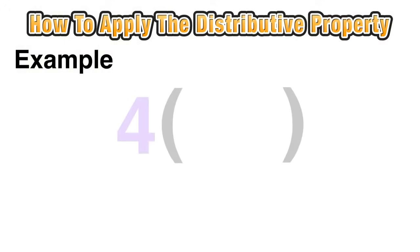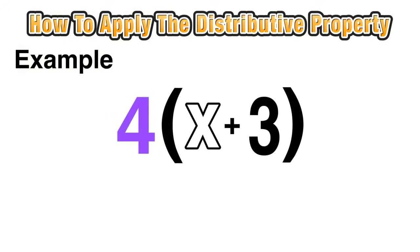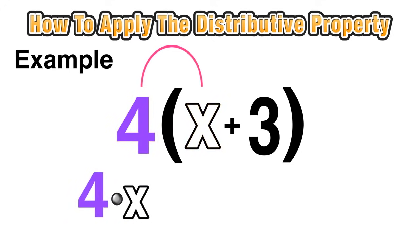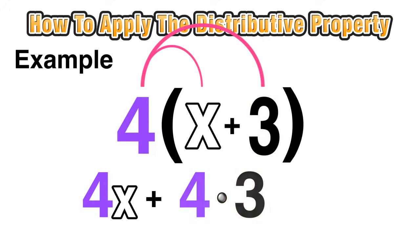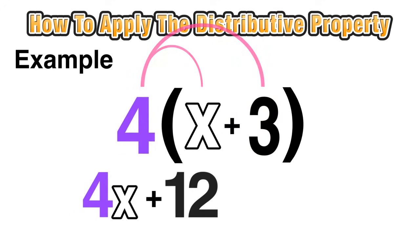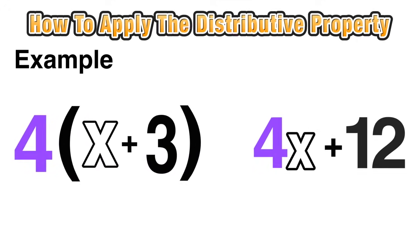Now we're going to extend our thinking to algebra. Our first example is 4 being multiplied by the sum of x and 3. We start by distributing that 4 to the first term: 4 times x, which we write as 4x. Then we carry the plus sign and distribute 4 to the second term: 4 times 3, which equals 12. That gives us 4x plus 12 — a simpler equivalent form of the original expression.